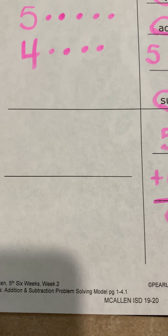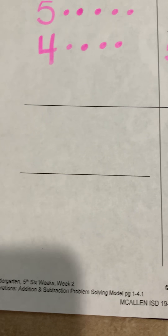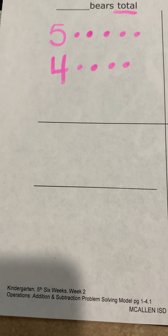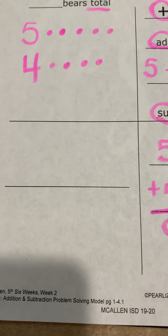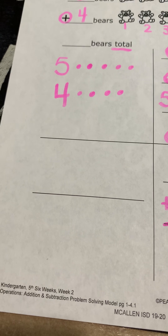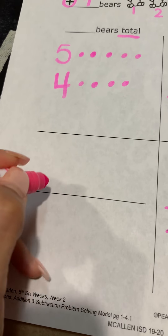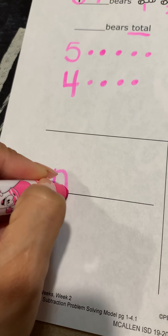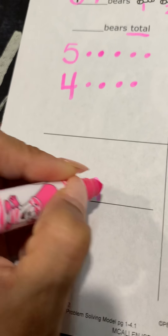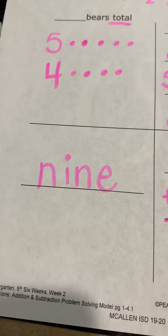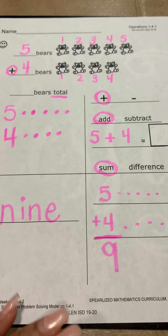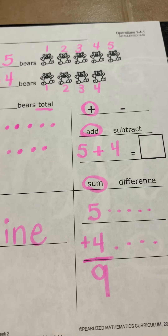Now we are going to evaluate the solution. We could do a complete sentence or the number word. Since we are kinder, we are just going to write the number word. Nine — the number word is N-I-N-E. And that is it for our problem-solving model.